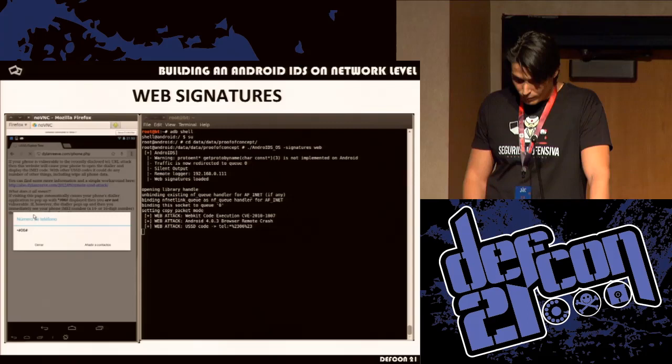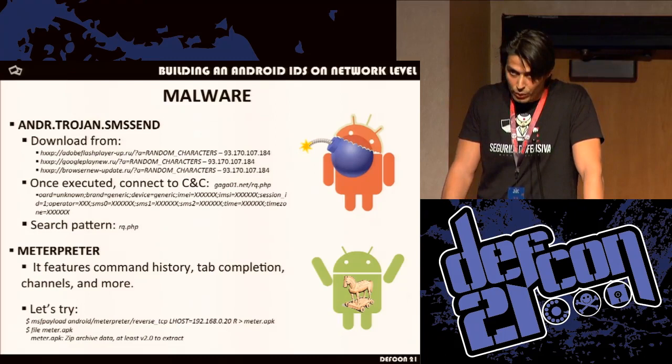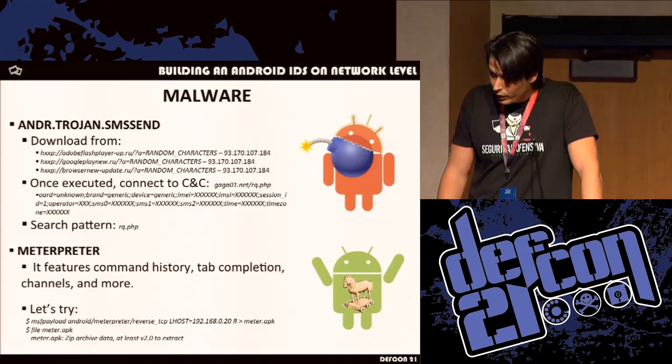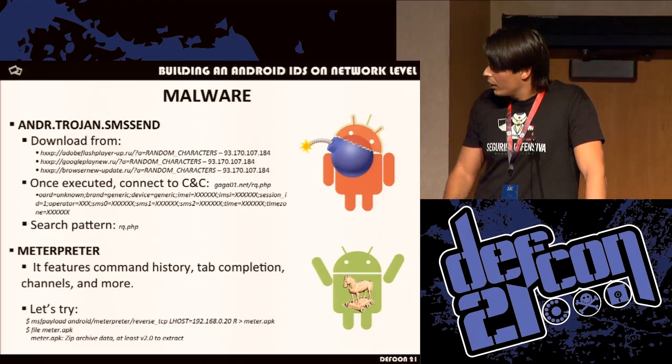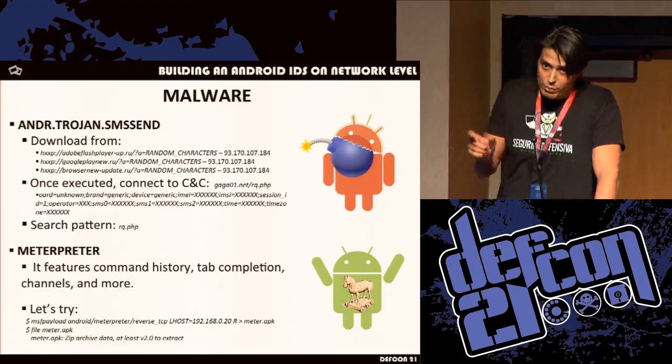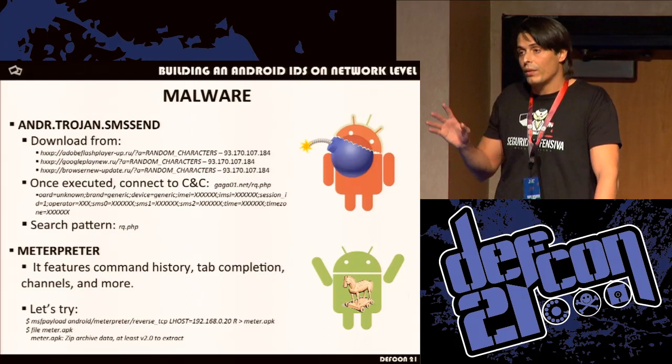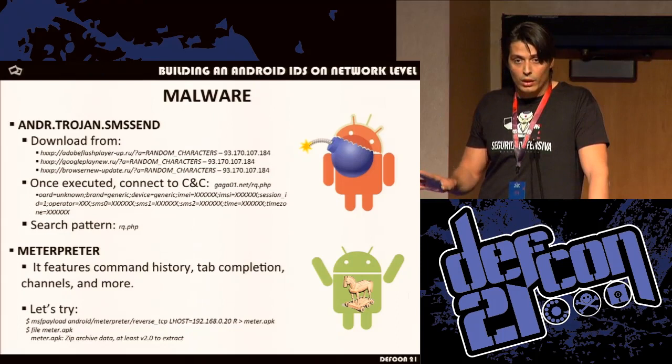The last thing I wanted to deal with was malware. There is a lot of malware for Android, and almost every malware has a pattern. I searched for one — in this case it is the SMS Send malware. You can download it, and when downloaded it connects to a command and control server. You can find the string it uses to connect to the remote server — the string to find in packets is 'RQ.PHP'. If we have the pattern the malware is using, we can detect almost every malware, and not only detect it — we can drop all the outgoing traffic it is sending.